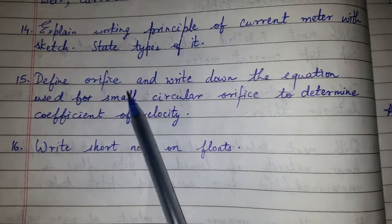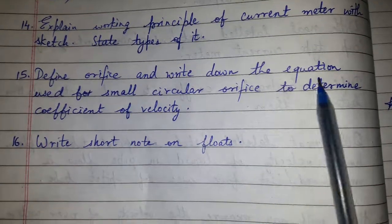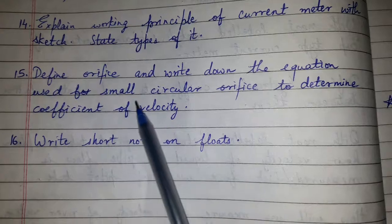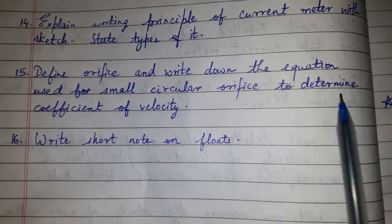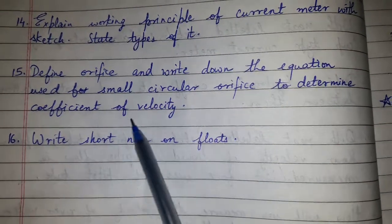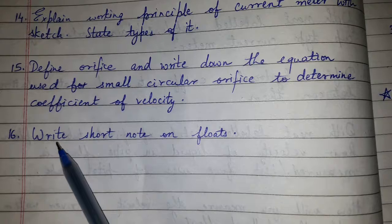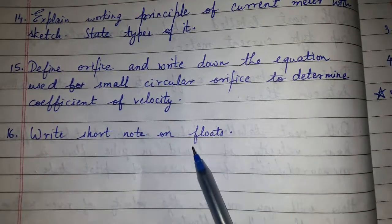Question number 16: Define orifice and write down the equation used for small circular orifice to determine coefficient of velocity. Question number 17: Write short note on floats.